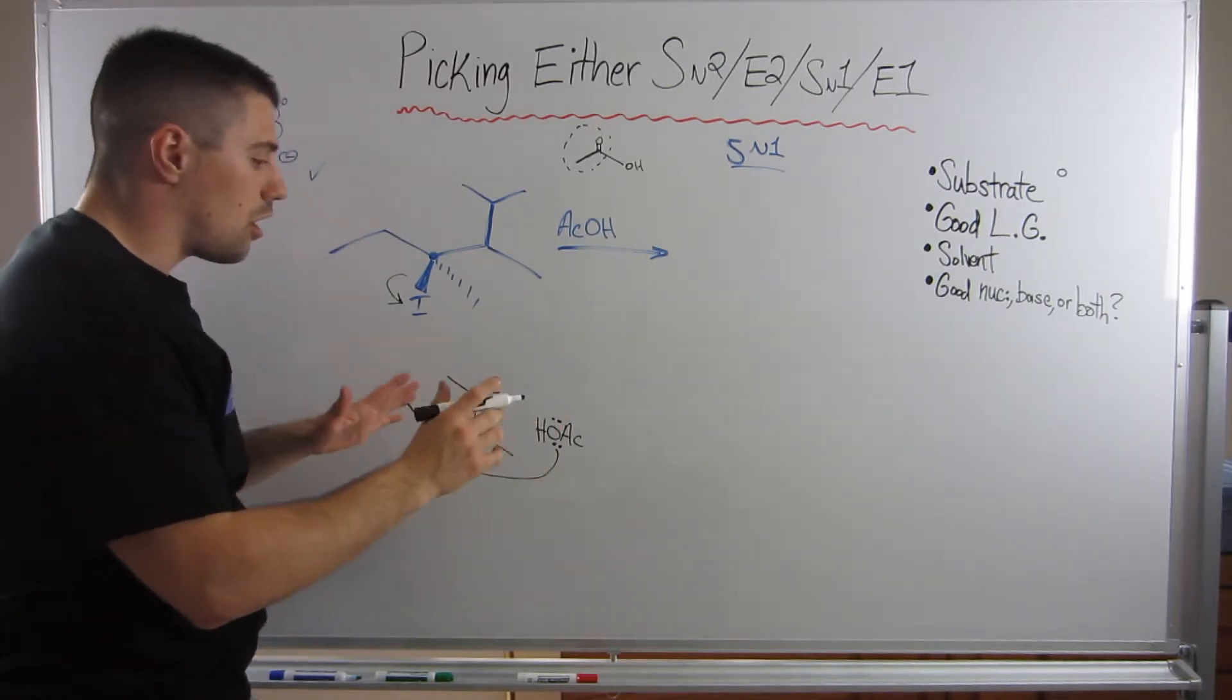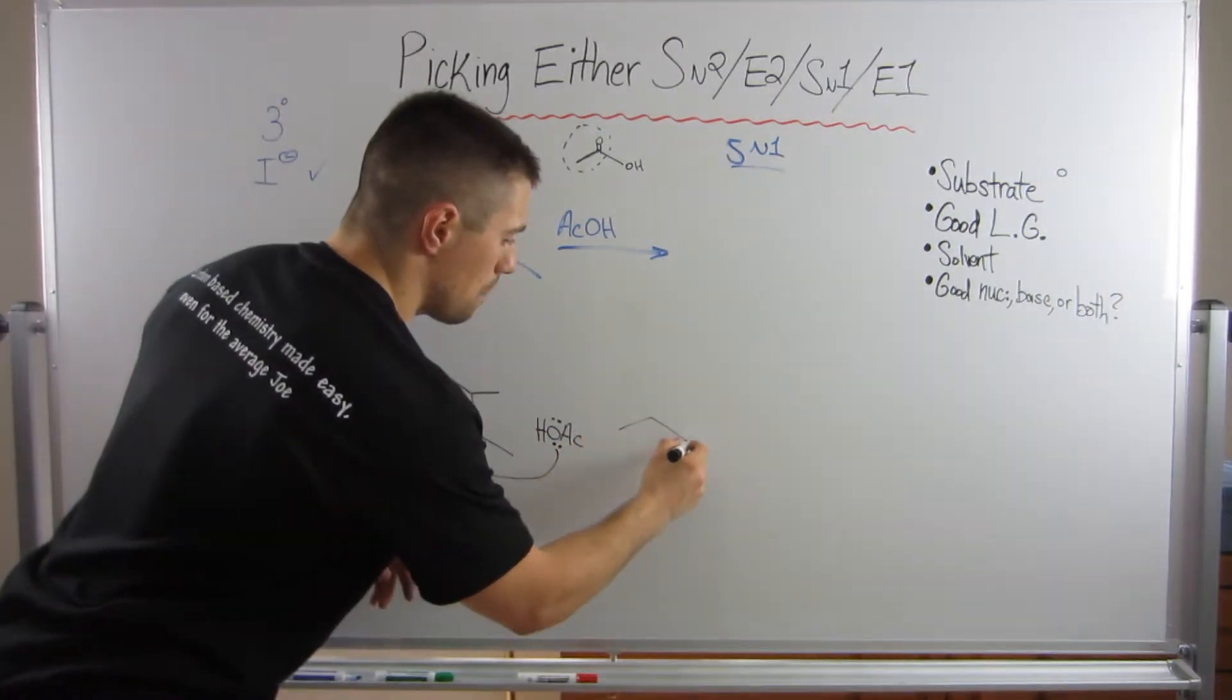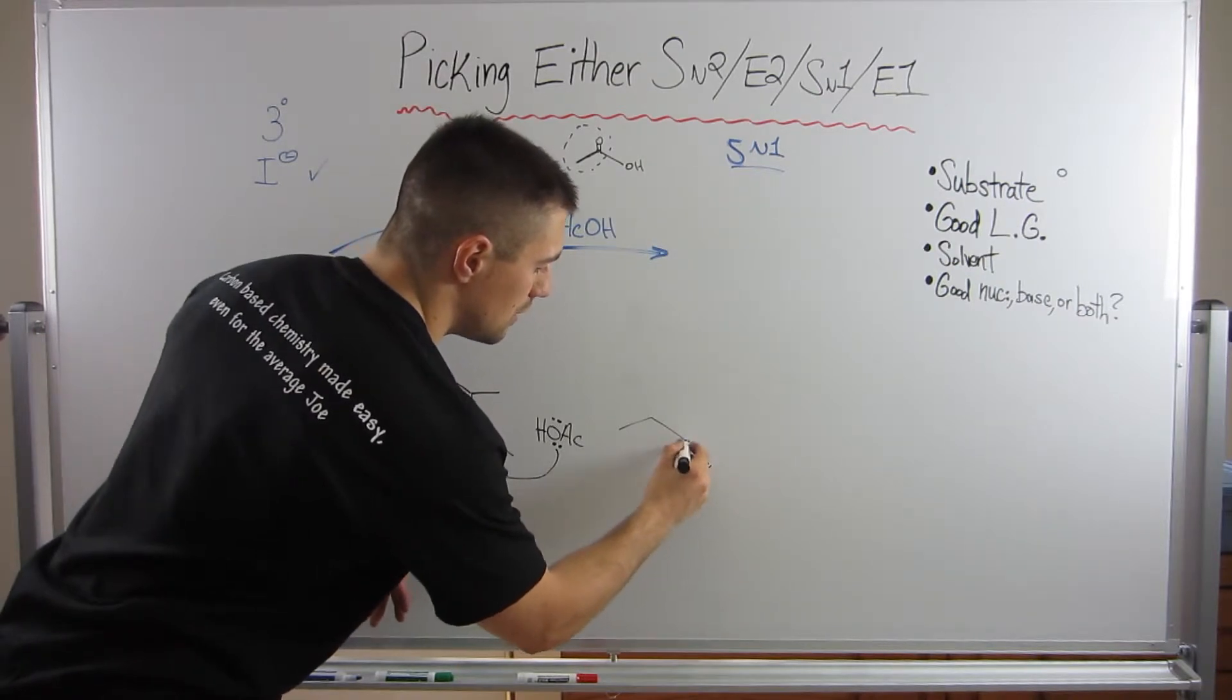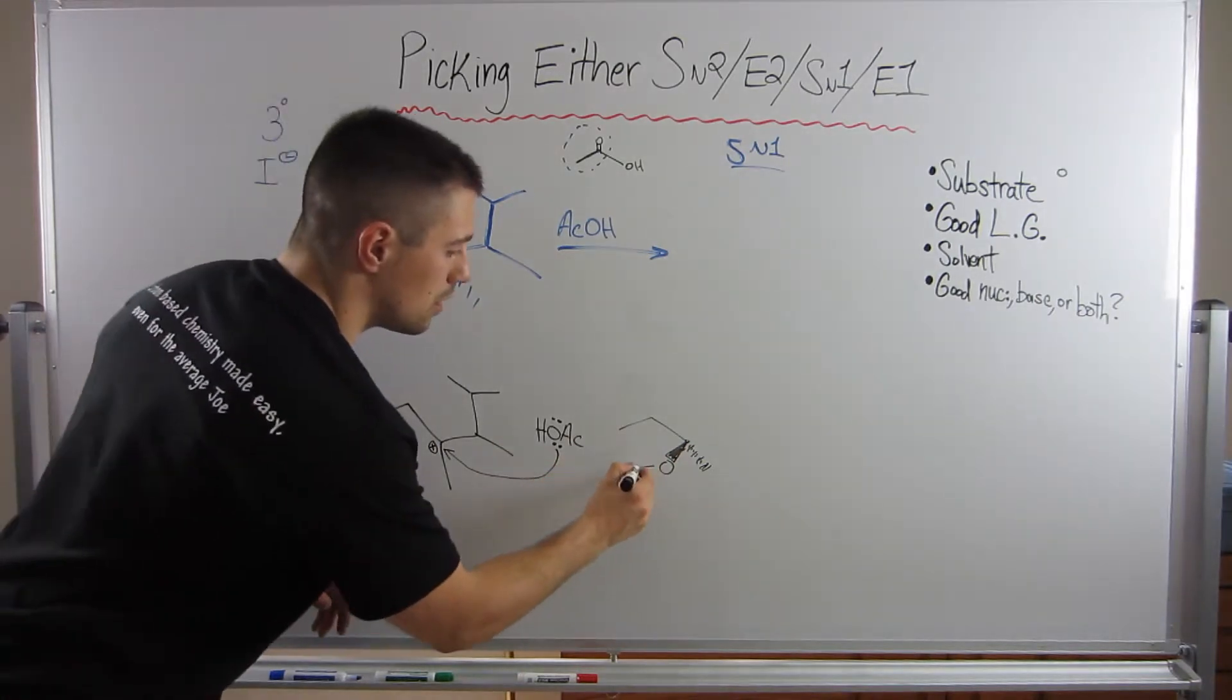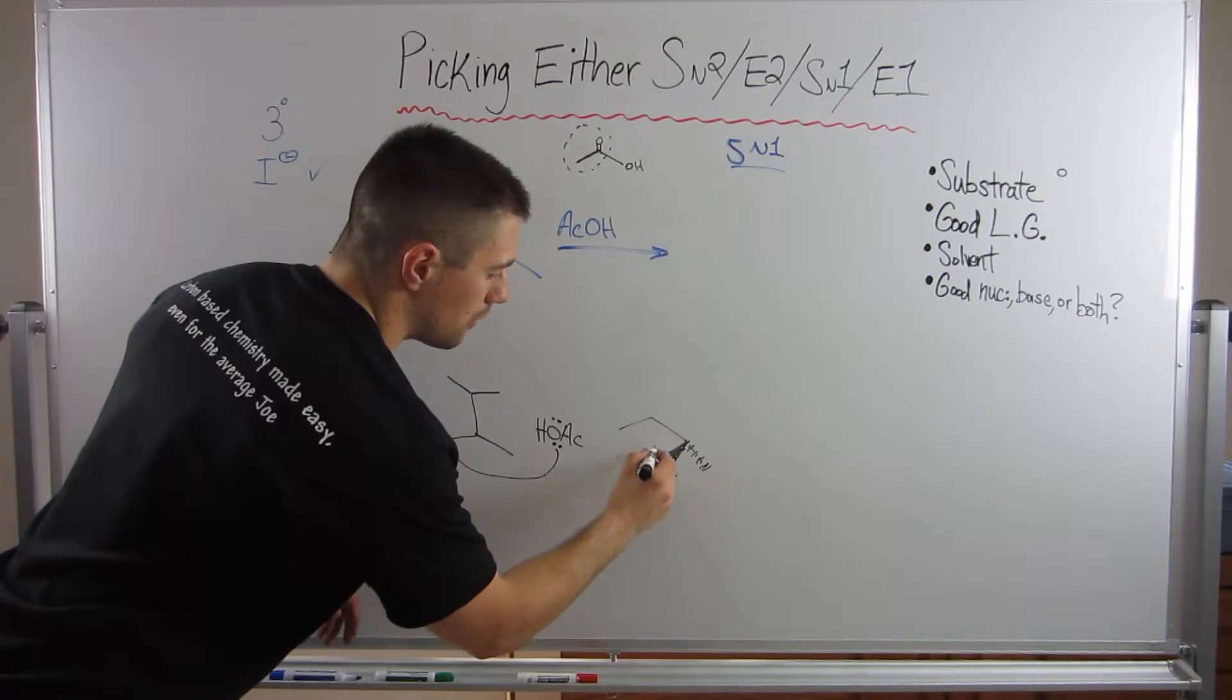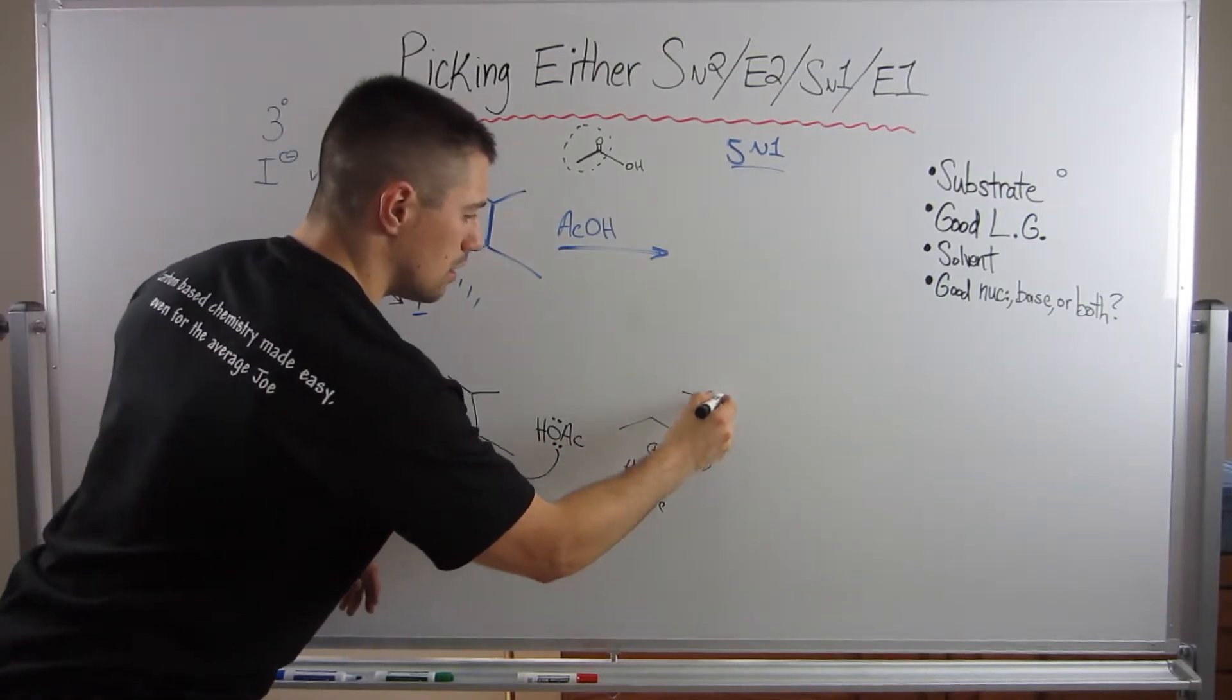So let me just initially draw the result of this. So I'm going to draw the dashed methyl group. I think this is big enough. So if I come in from the top, acetic acid attached by the oxygen will be a wedge. And he will have a positive charge. So this is what we got.